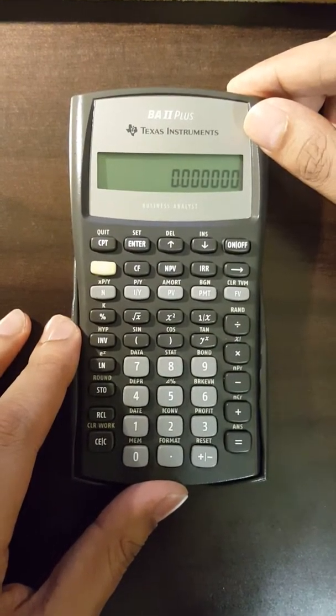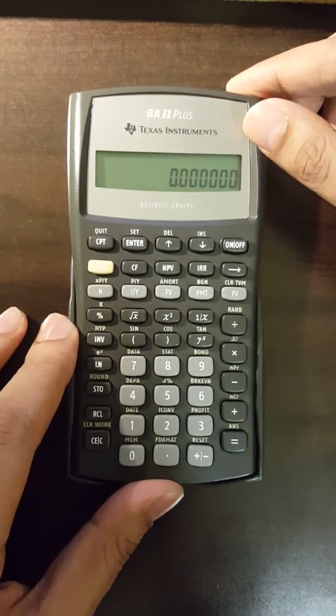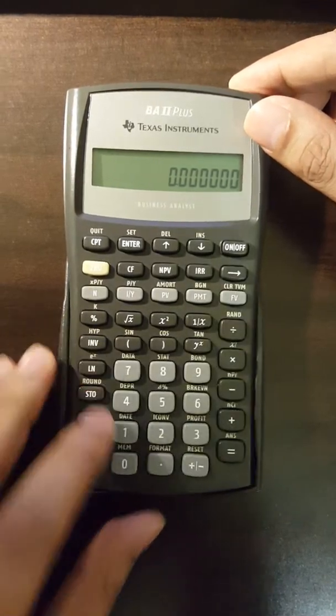We don't have any cash inflow or outflow at time 0. For CF1, present value is 1000.